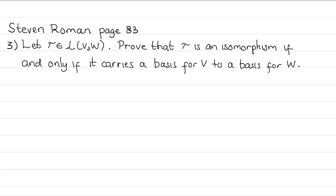Hello, in this video we're going to solve the following problem from Stephen Roman, page 83. Let tau be a linear transformation from V to W, and we would like to prove that tau is an isomorphism if and only if it carries a basis for V to a basis for W. First we're going to prove the right direction.